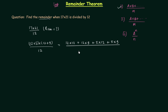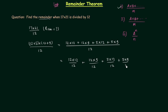While solving problems you don't have to perform this step — this is only for explanation purpose. We can separate each term: 12×12 divided by 12, plus 12×9 divided by 12, plus 5×12 divided by 12, plus 5×9 divided by 12. The first three terms give remainder 0 because 12 cancels out in each case, giving a perfect division with no remainder left.